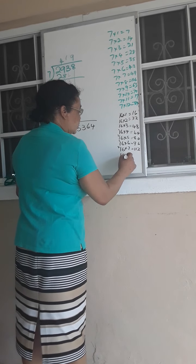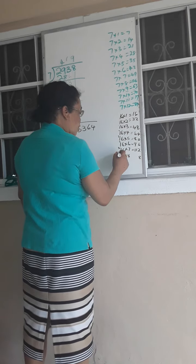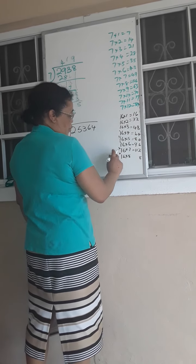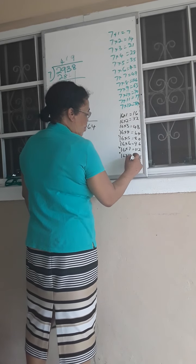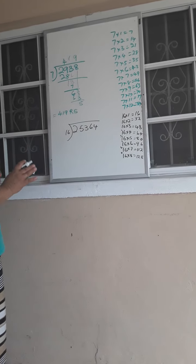16 times 8. 8 times 6 is 48, 8 carry 4, 8 times 1 is 8 plus 4 is 12, so 128. And I'm going to stop right there. I don't think I'm going to need more than that.